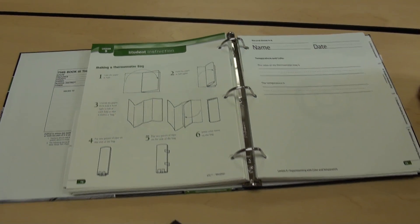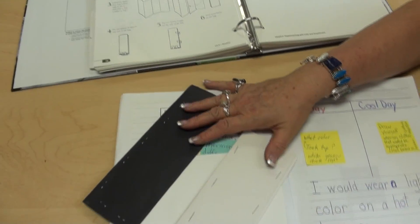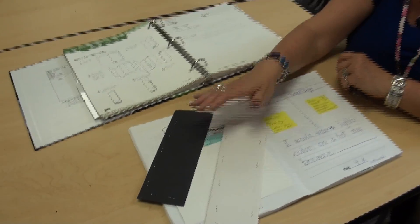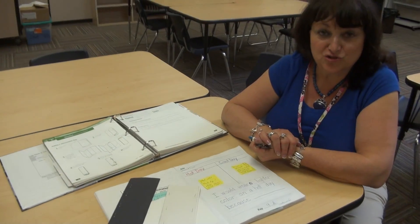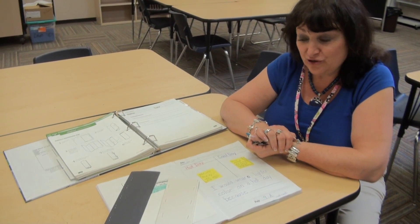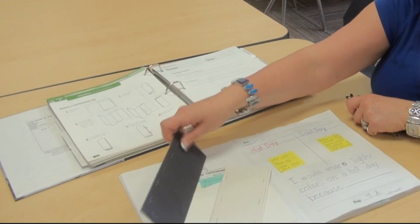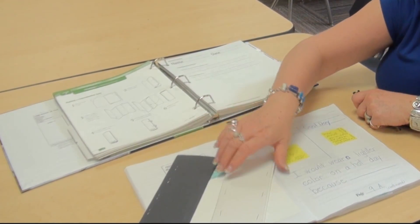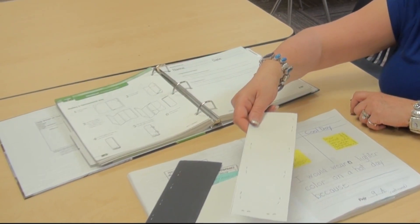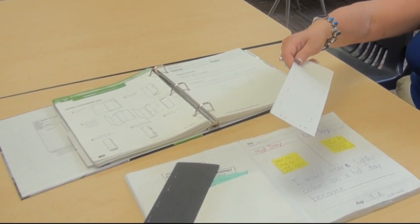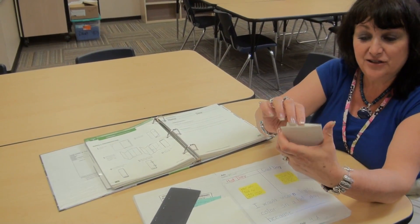Now, some teachers will make a whole set for their class and keep it from year to year. But some teachers like to have the children make their own little sleeping bags. However you do it, the children need to go outside in pairs. One child would have a black thermometer bag, one child would have a white thermometer bag, and their thermometers fit right inside the little bag here.